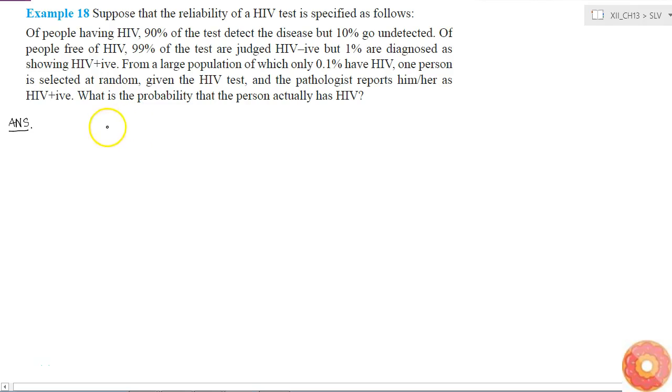In this question we have two events. Event A is the selected person actually has HIV, and event B is test shows HIV positive. These are the two events.